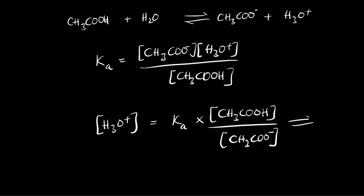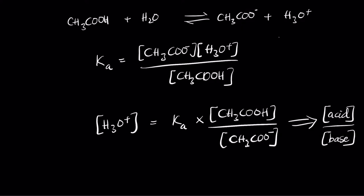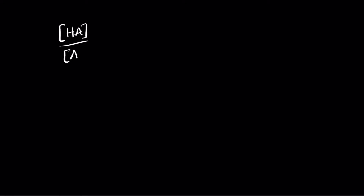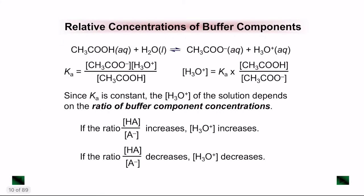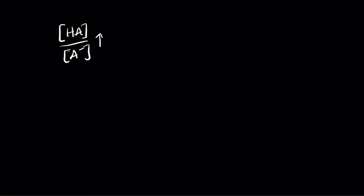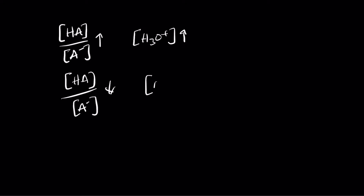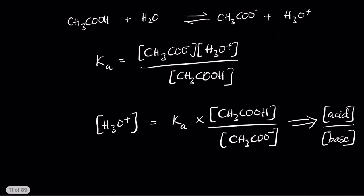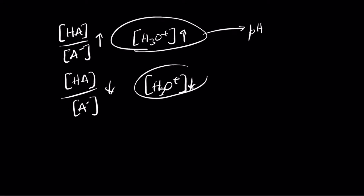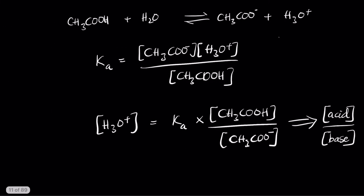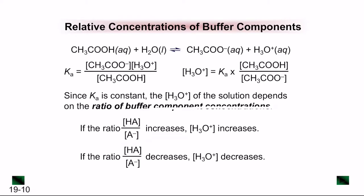This represents the ratio of acid concentration to base (conjugate) concentration. If the ratio of acid to conjugate base increases, the H3O⁺ concentration increases, and the pH decreases. If the ratio decreases, the H3O⁺ decreases and the pH increases. So the ratio of the buffer components directly affects the H3O⁺ and thus the pH of the solution.